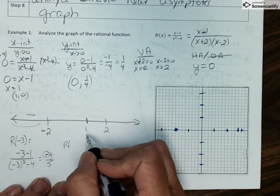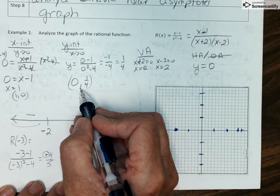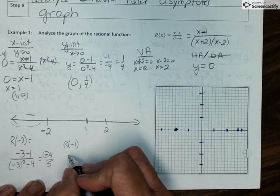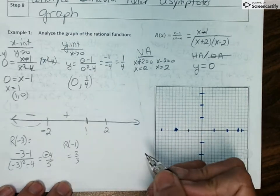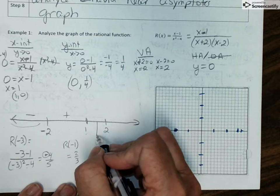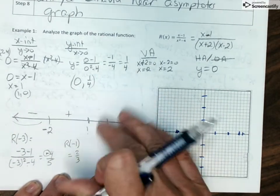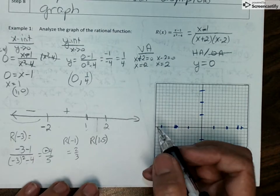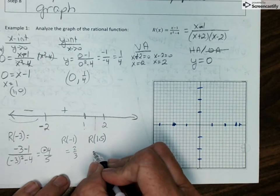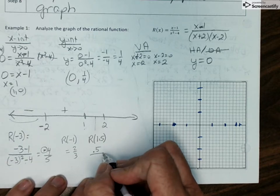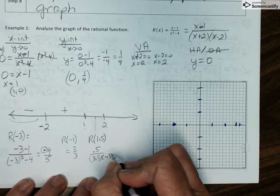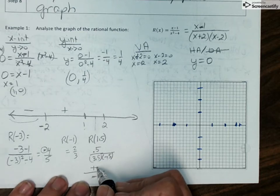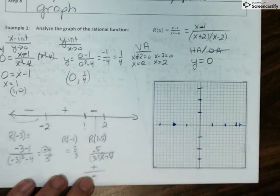I'm going to do the same thing here, plugging in some value between negative 2 and 1. Now I've already plugged in 0. That's how I got the y-intercept. So let's pick a different number. So negative 1. Plug that in. And when you plug in negative 1, your answer here is positive 2 thirds. So we get a positive sign. Again, plug these in yourself to make sure you understand. Between 1 and 2, I now need to plug in some value. I'm going to plug in 1.5. It's right in the middle. Well, when I plug in 1.5, I end up with 0.5 over, let's see, 3.5 multiplied by negative 0.5. So I have a positive in the numerator. Positive times a negative is a negative. And a positive divided by a negative is negative. So that gets a negative sign.